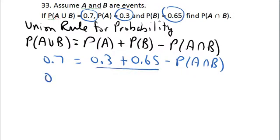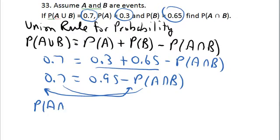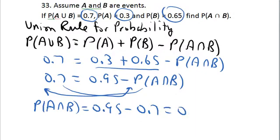Start by adding those two numbers together: 0.3 plus 0.65 gives 0.95. The term you're solving for is negative on the right, so move it over and let the 0.7 move to the right. That gives you the probability of A intersect B equals 0.95 minus 0.7, which is 0.25. So the probability of A intersect B by the union rule is 0.25.